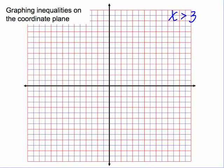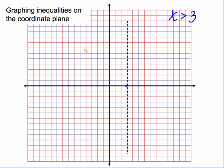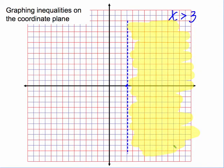Now we'll look at the special case of inequalities in one variable plotted on the coordinate plane. For x is greater than 3, the boundary line is the vertical line x equals 3. Since this is a strict greater than — not greater than or equal to — the boundary must be a dashed line. The points where x is greater than 3 are all to the right of this line, so we shade that side.